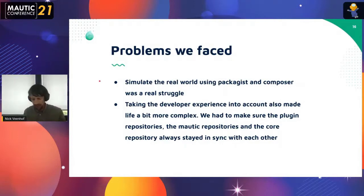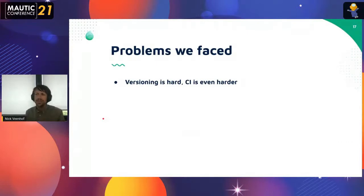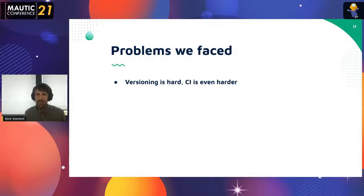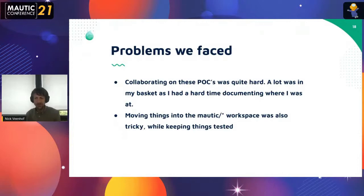The plugins folder should at every commit be synchronized to another repository so it could live on its own as a dependency in the package dependency management, and should always stay in sync including releases. That was quite problematic to simulate. Also, versioning is hard, and continuous integration of all these components — making sure that a pull request against mautic/mautic works as expected — is also really tricky, but it's solved. Collaborating on these proof of concepts was quite hard, as a lot of it was in my basket locally.